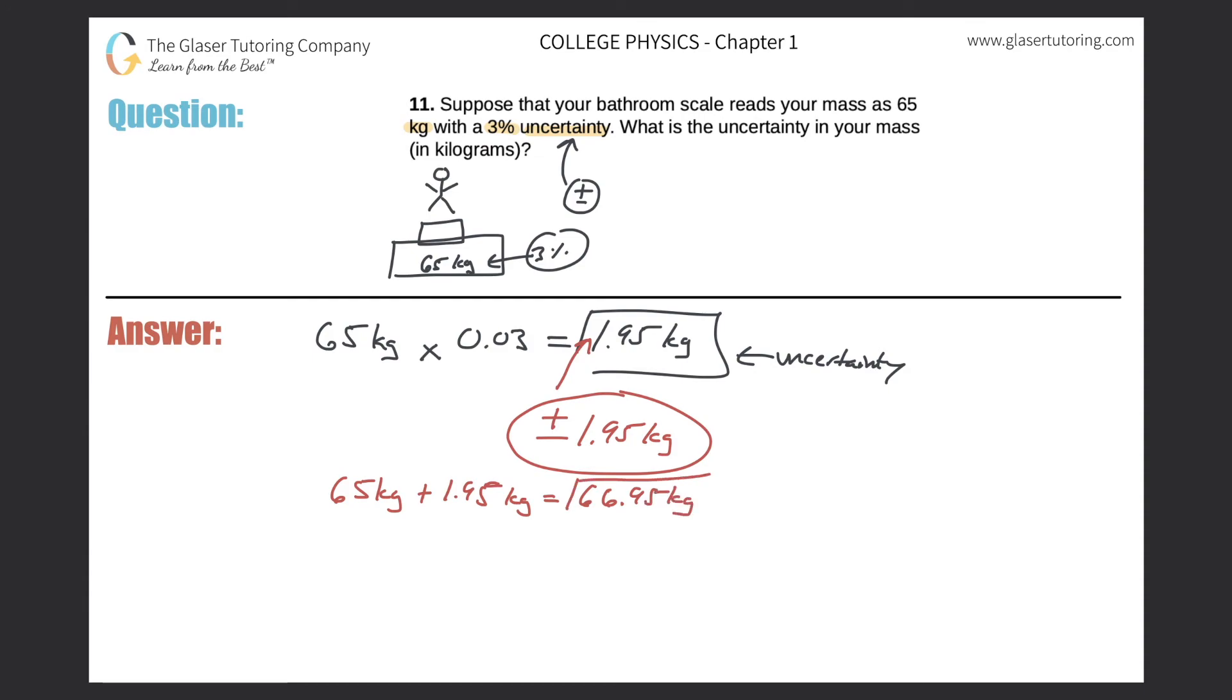That's the upper limit of the uncertainty. And then to find the lower limit of the uncertainty, just subtract the 1.95 kilogram value. So the lower bounds will be 65 minus 1.95. So it comes out to 63.05 kilograms. So this would be the range that I just drew right in here.